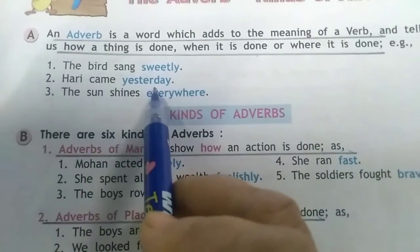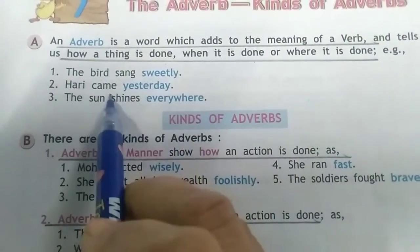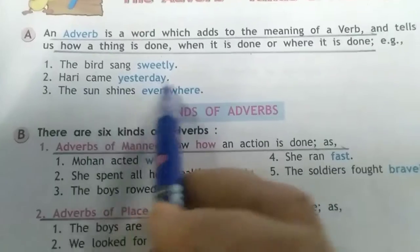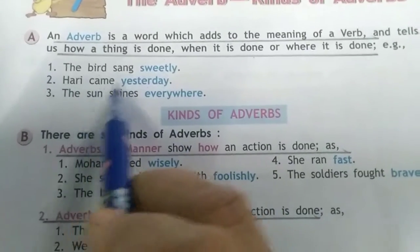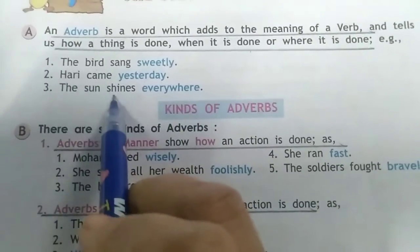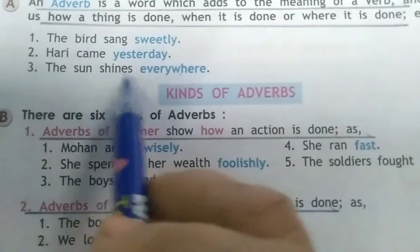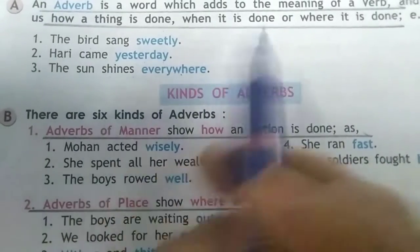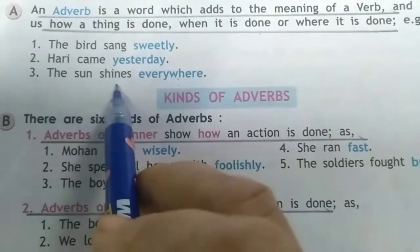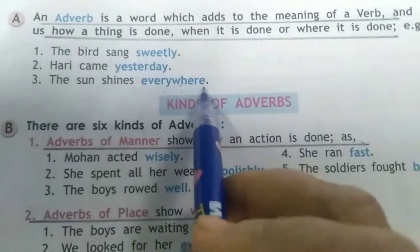'Hari came yesterday.' When did Hari come? Yesterday. So, 'yesterday' is the adverb and 'came' is the verb. 'Dashaan shines everywhere.' 'Shines' is the verb and the adverb gives meaning to the verb — 'everywhere' is the adverb.